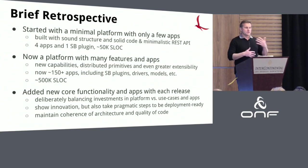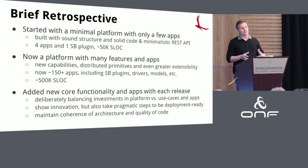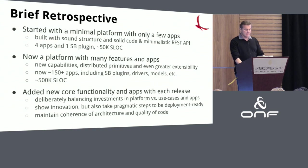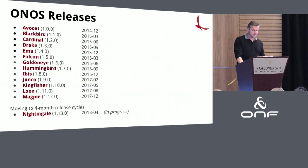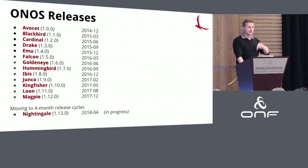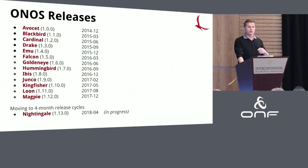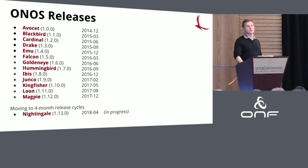The way we generally try to develop functionality is to balance investment in new features and demonstrating new capabilities with also building resilience into the platform — this is especially true in the last few releases. In the past we've done three-month releases, but as of the current Nightingale release we've moved to a four-month cycle. This allows us to be more in sync with the CORD releases and feed the ONOS releases nicely into the CORD release stream.